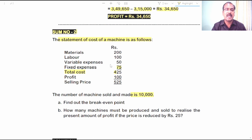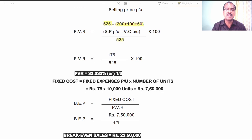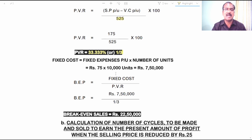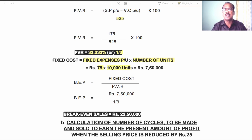Fixed cost divided by PVR is the formula for calculating break-even point. To calculate PVR, apply the formula: contribution margin per unit divided by selling price per unit into 100. Contribution margin per unit = selling price per unit minus variable cost per unit = 525 minus 350, divided by 525 into 100, which gives us 33.333% or 1/3. That is the PVR. Now, let us calculate total fixed cost: fixed expenses per unit 75 rupees into 10,000 units produced comes to 7,50,000 rupees.